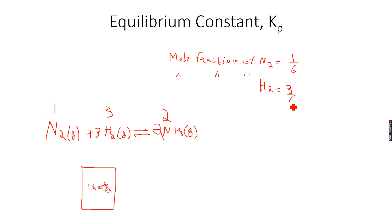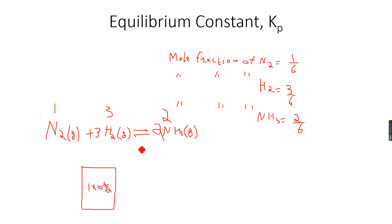The mole fraction of H2 will be 3/6, which is the same as one half, because I have 3 mols of H2 among the 6 mols in the equilibrium mixture. The mole fraction of NH3 is 2/6 because I have 2 mols of NH3 among the 6 mols. When we add them: 1/6 + 3/6 + 2/6 = 6/6 = 1, so the proportions are complete. These are the mole fractions.